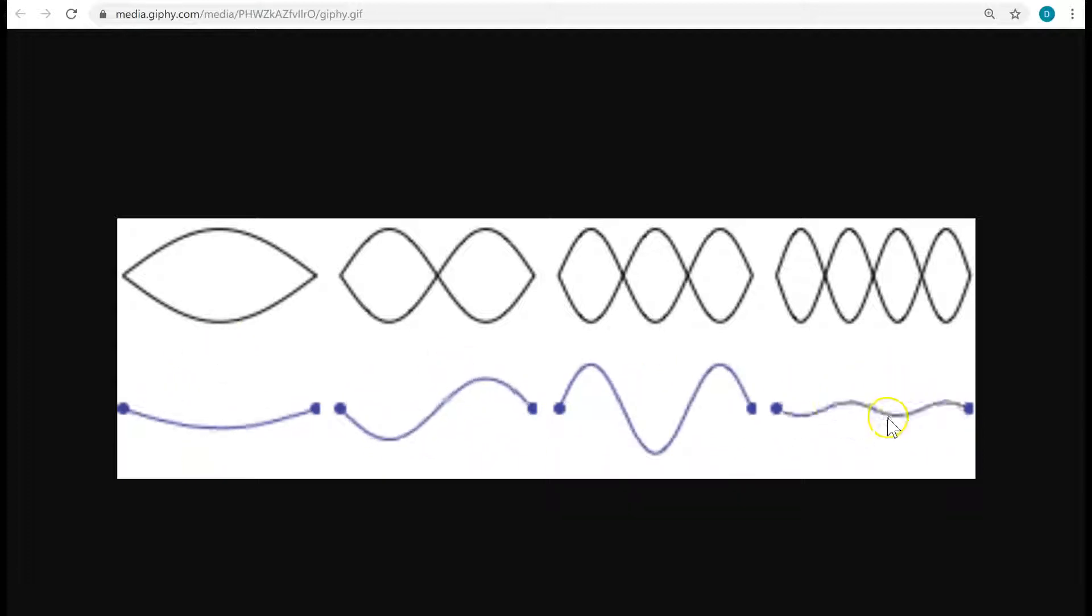The harmonics are just the particular frequencies of standing waves that can be produced on a string. Or as we'll learn later, you can produce harmonics, standing waves, on other media too, like inside the air of a pipe.